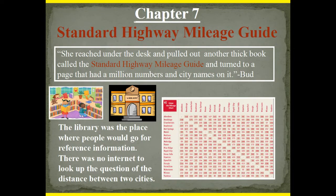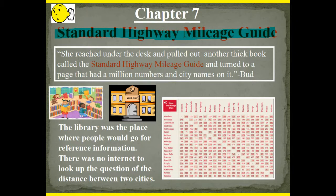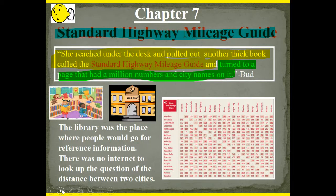Listen to this slide — you don't need to write it down. Chapter 7 references the Standard Highway Mileage Guide. Here's the quote: 'She reached under the dust and pulled out another thick book called the Standard Highway Mileage Guide and turned to a page that had a million numbers and city names on it.' The phrase 'a million numbers and city names' is hyperbole — there wasn't literally a million. That's an exaggeration.